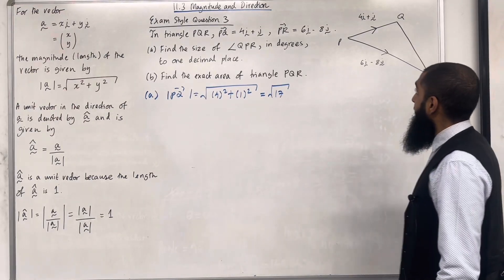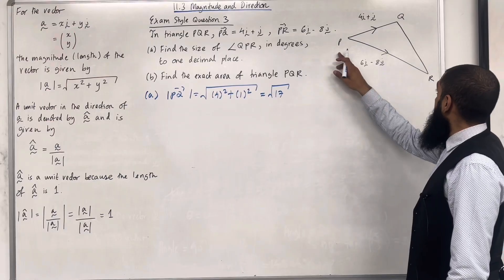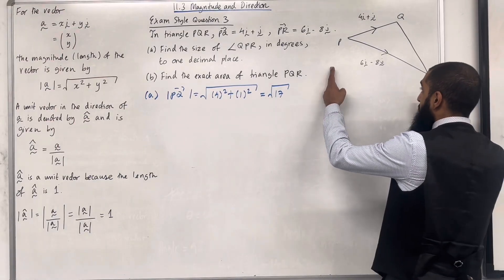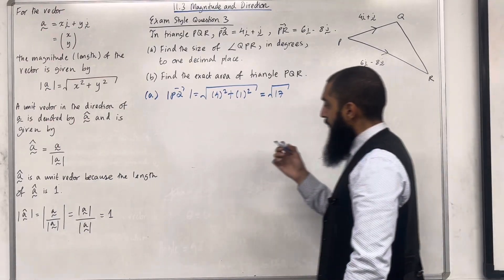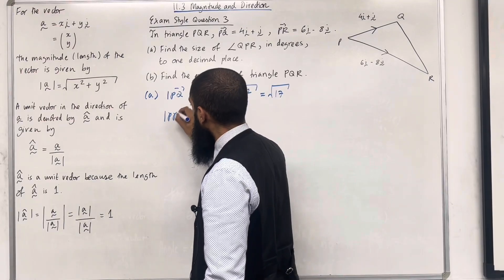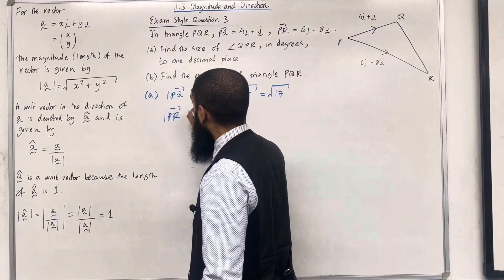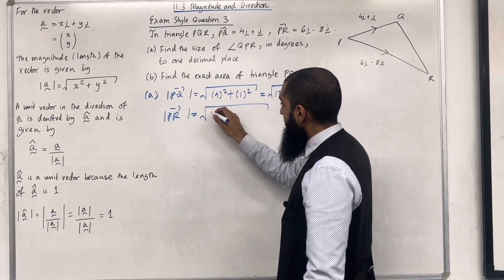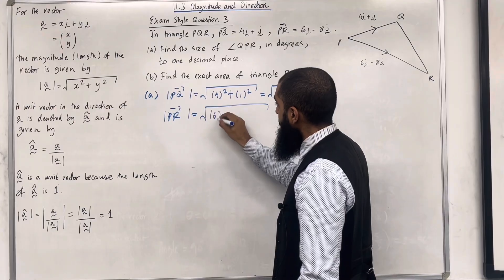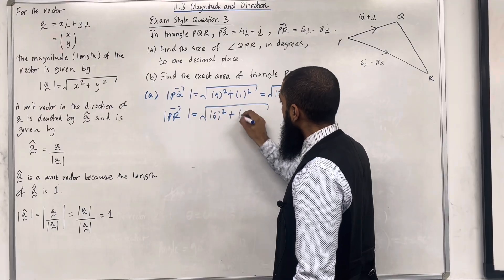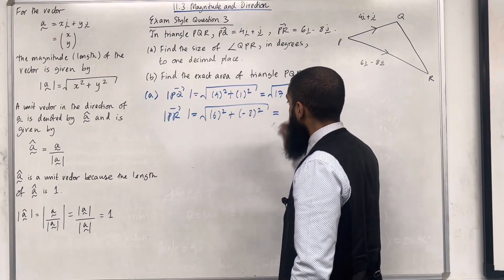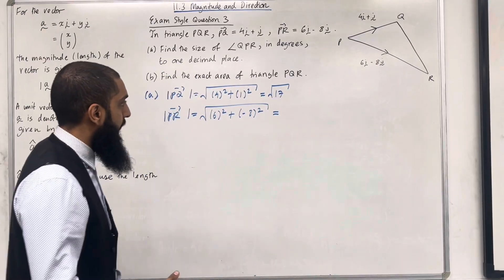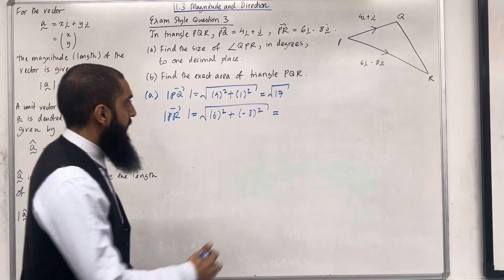Now I'll work out the length of PR. The magnitude of PR is given by √(6² + (−8)²). Putting this into the calculator gives 10.